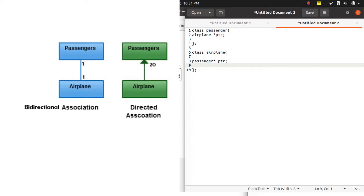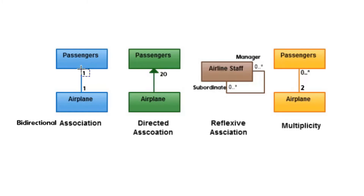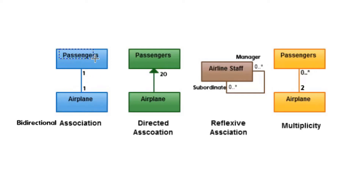Here we see that cardinality is one-to-one, but if we had a different cardinality, how would we implement that? Before we can implement that, we need to understand how to actually read the cardinalities. Whichever class we have, we always read the cardinality from one class to the opposite side. So for the Airplane class, to know how many passenger pointers it has, we always look towards the opposite side's cardinality. For this Airplane side, we read the cardinality associated with the Passenger side, which is one.